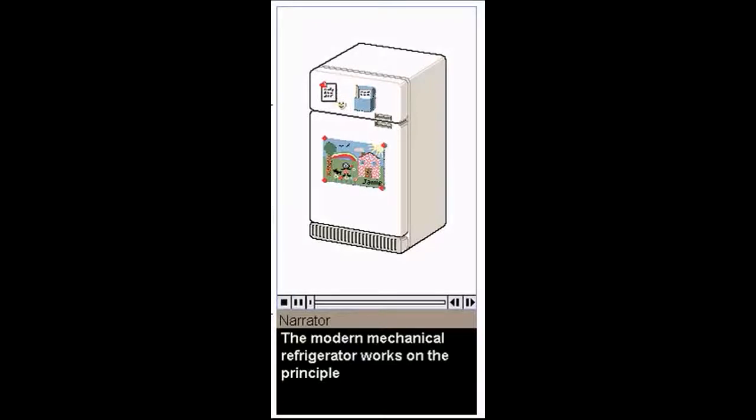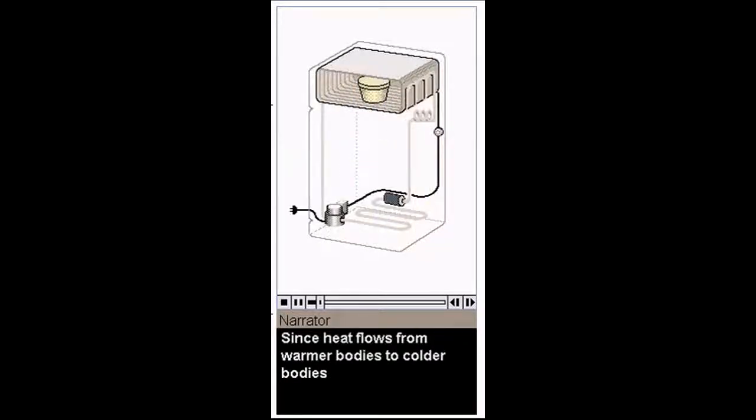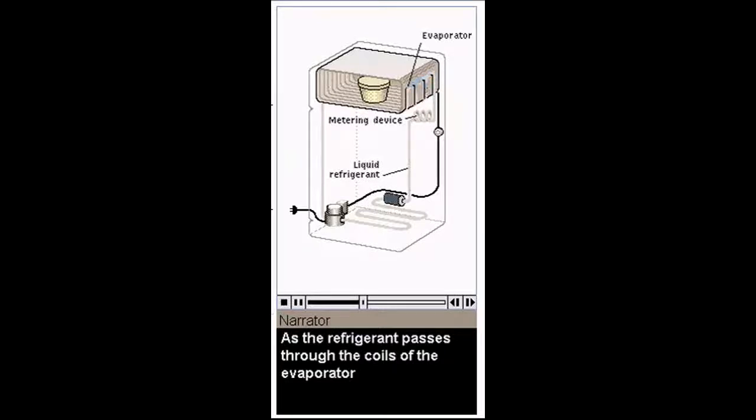The modern mechanical refrigerator works on the principle that a liquid absorbs heat when it turns to a gas. The gas carries away heat during evaporation, leaving a cooled liquid behind. Since heat flows from warmer bodies to colder bodies, a vaporizing liquid cools objects that are in contact with it. Pressurized liquid refrigerant leaves a storage container under high pressure. It flows through a metering device containing a length of narrow tubing where the pressure drops and the liquid vaporizes into gas. As the gas enters the evaporator, it has a lower temperature than it did as a liquid. As the refrigerant passes through the coils of the evaporator, it absorbs heat and cools the inside of the cabinet.